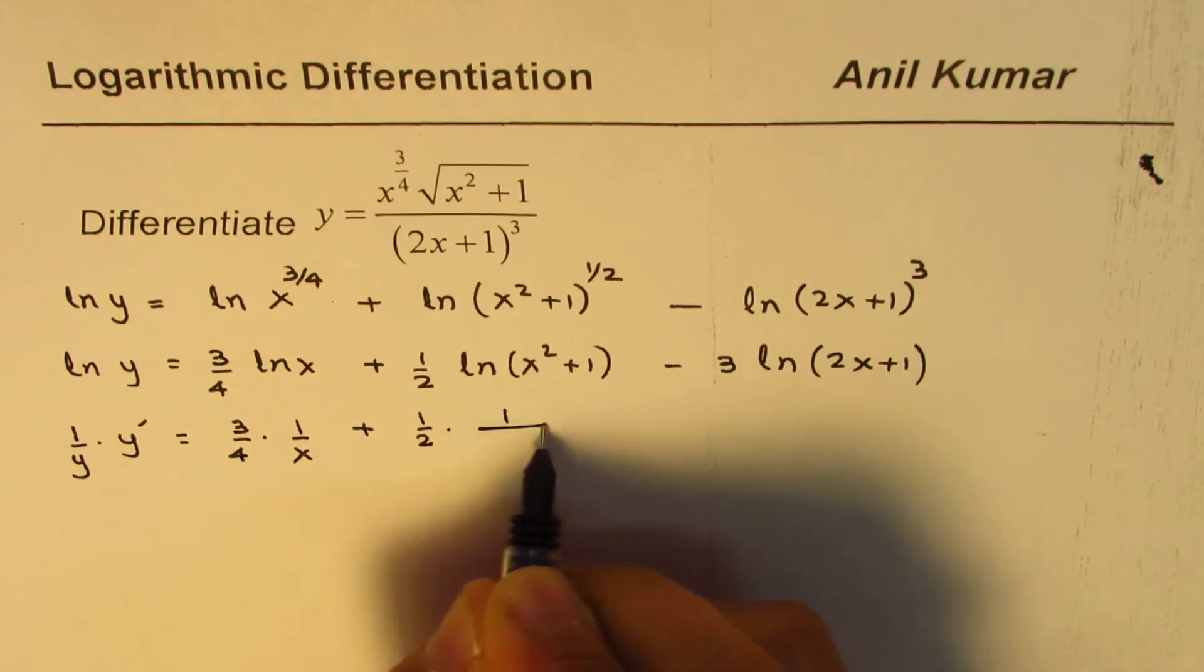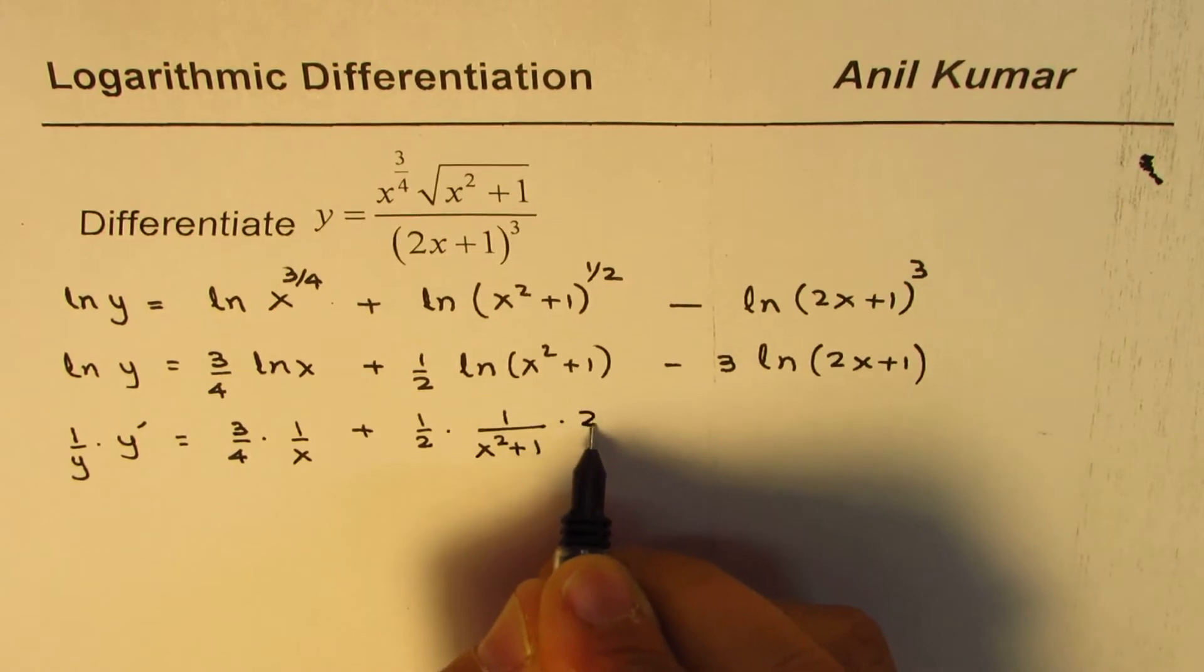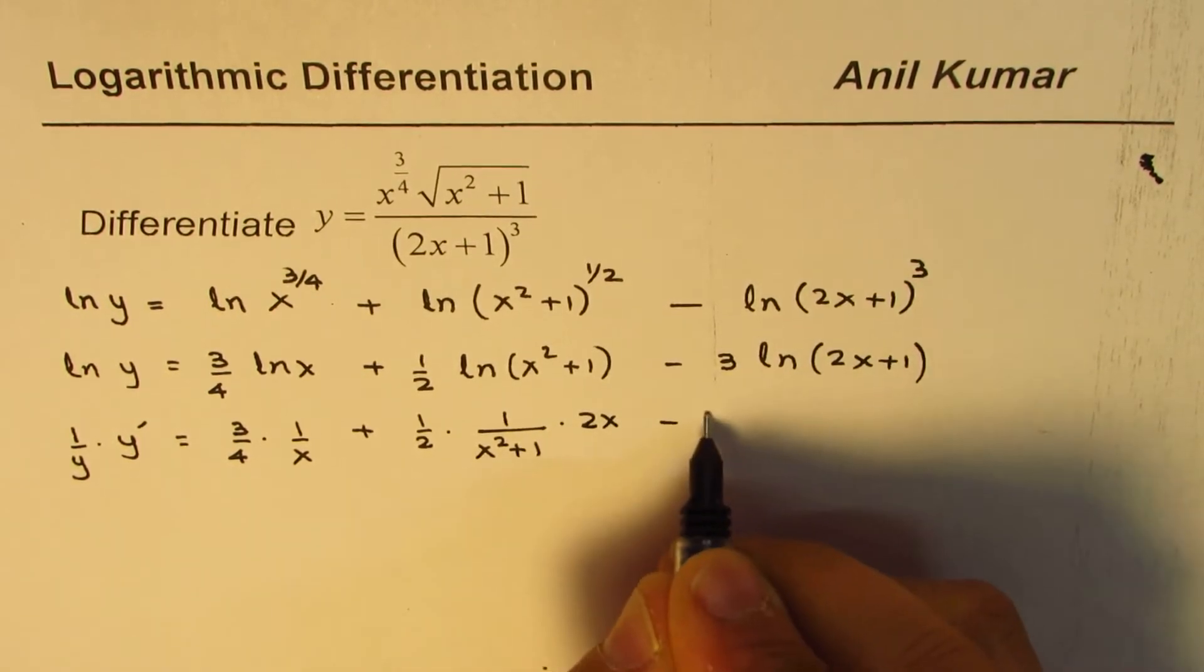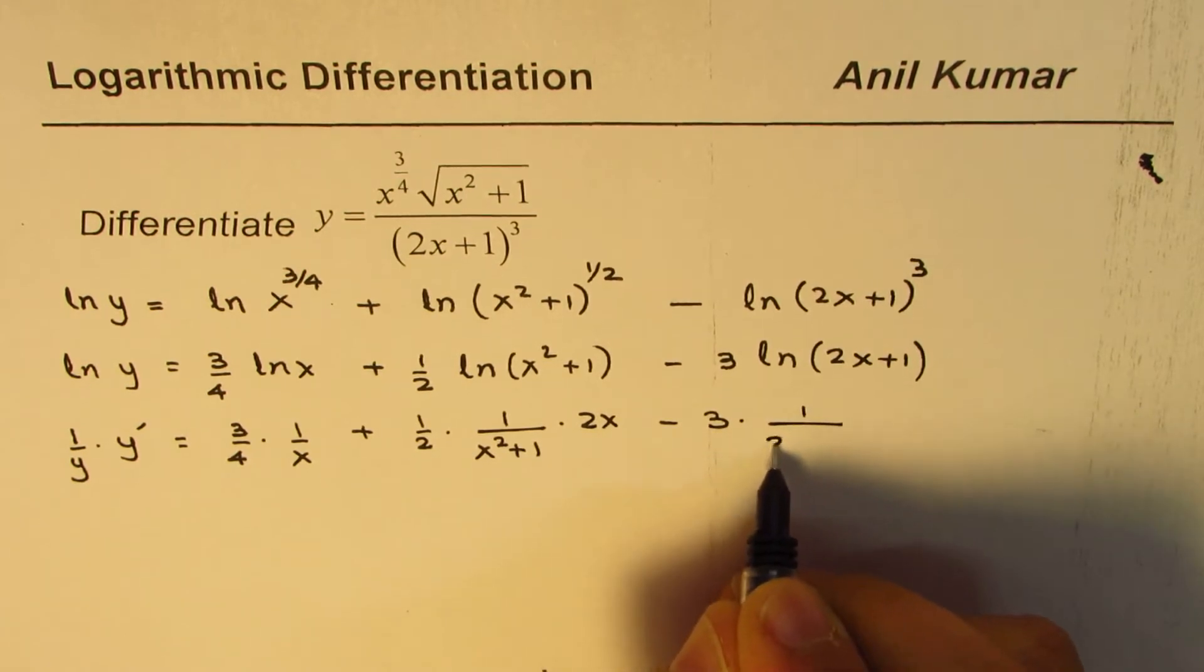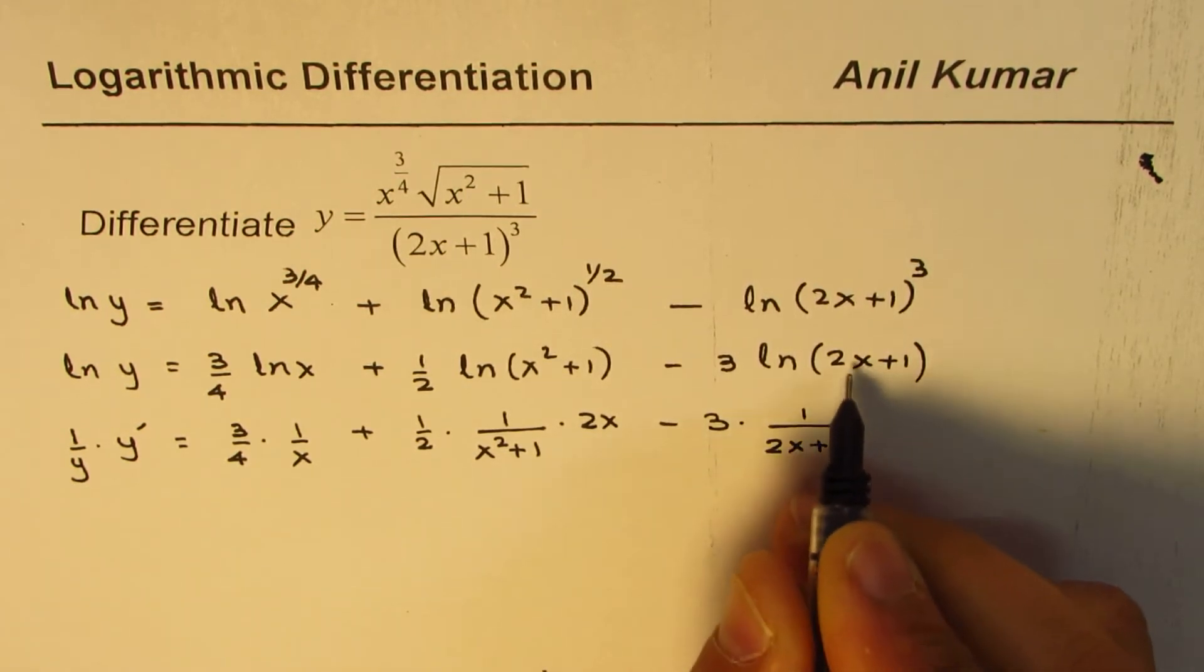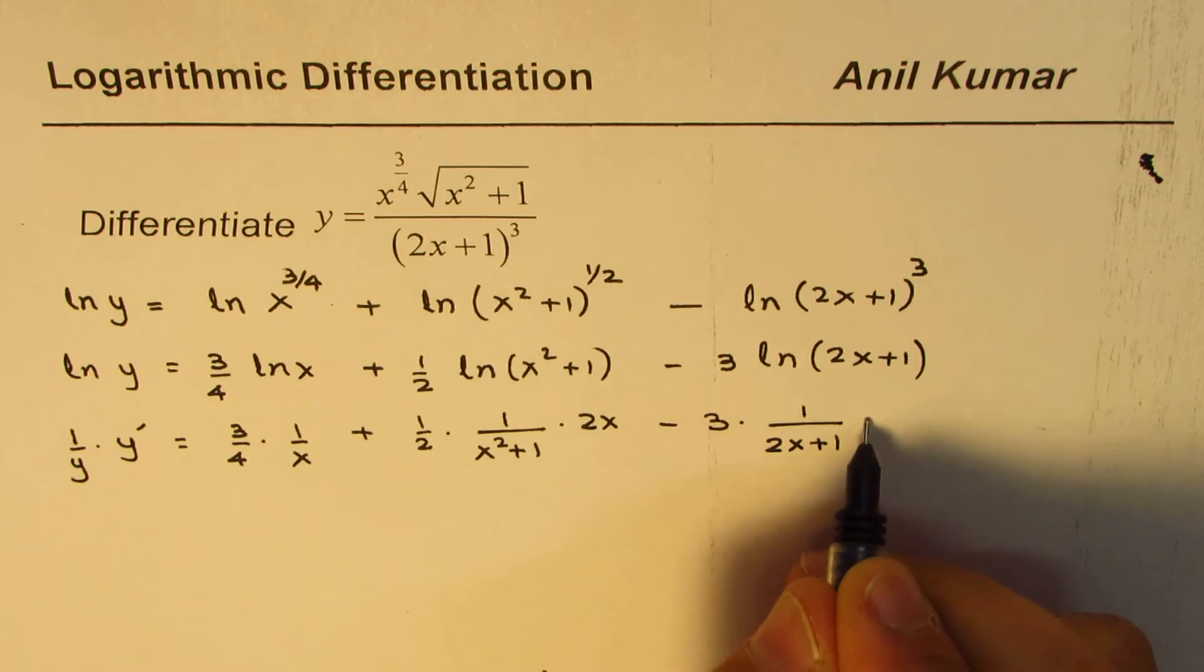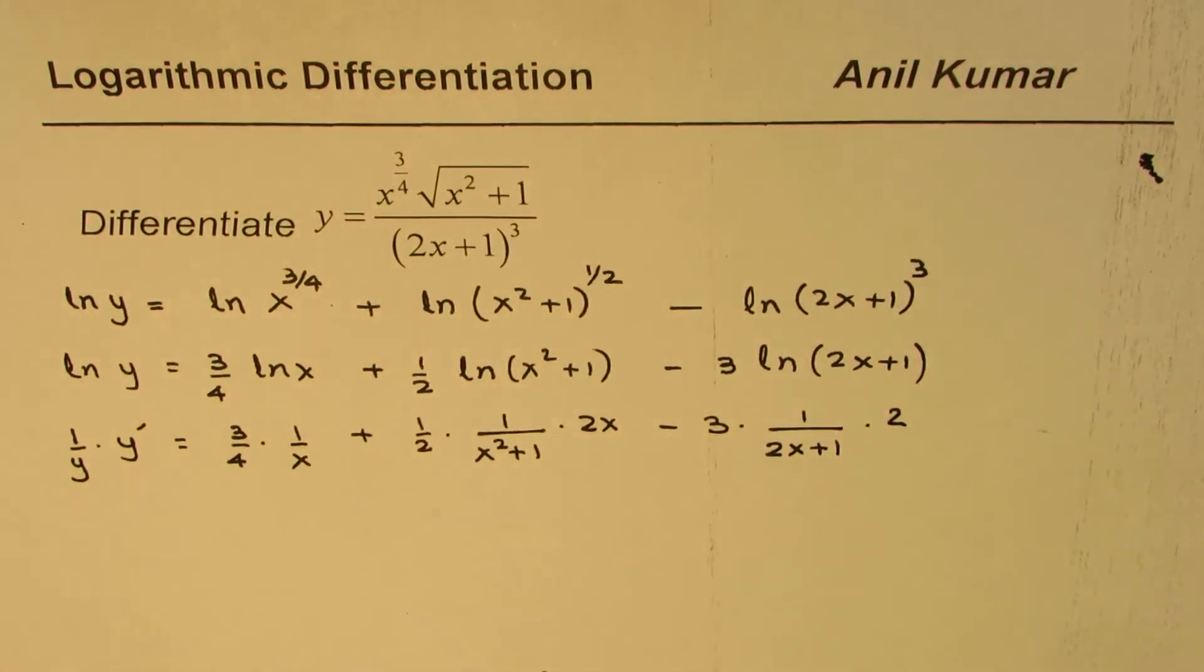...3 times derivative of this, which is 1/(2x + 1) times the derivative of the inside function, which is 2. That is how you can find the derivative. See how simple it is now?